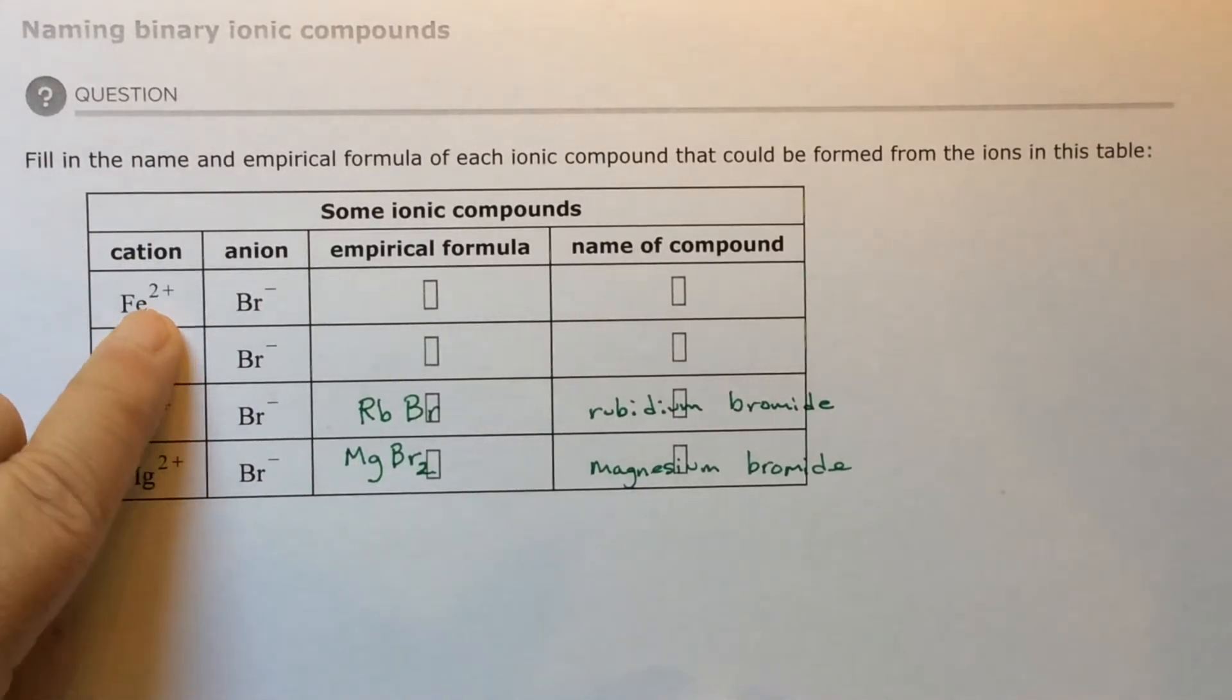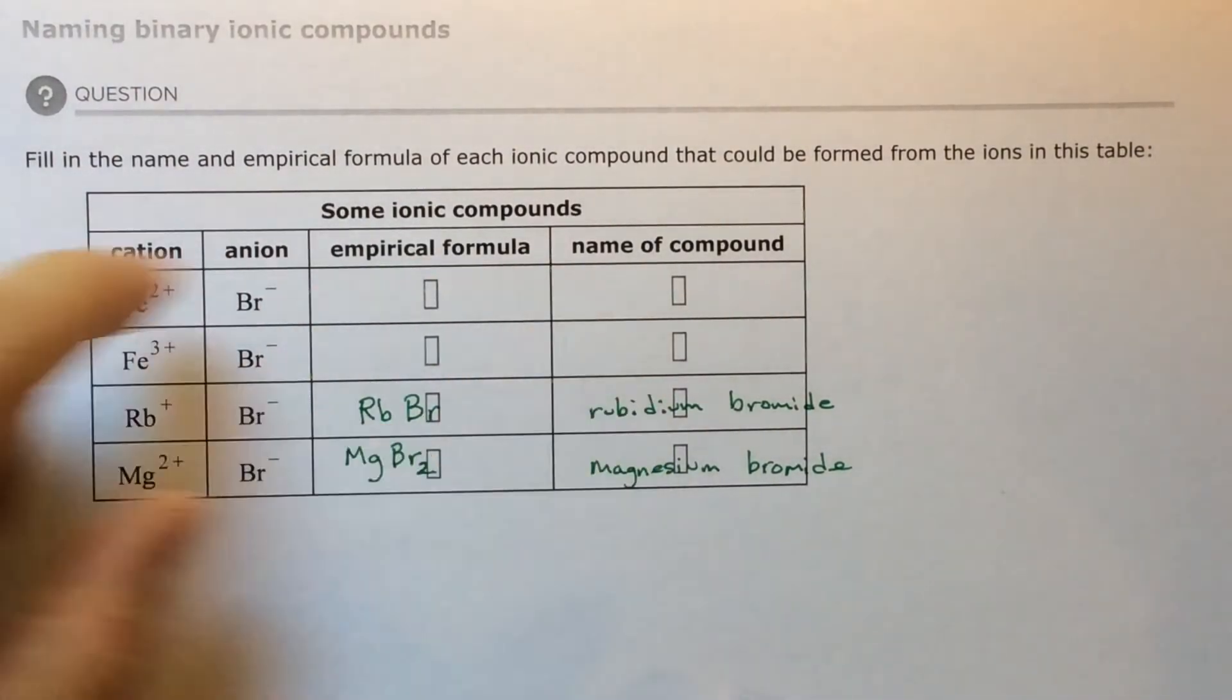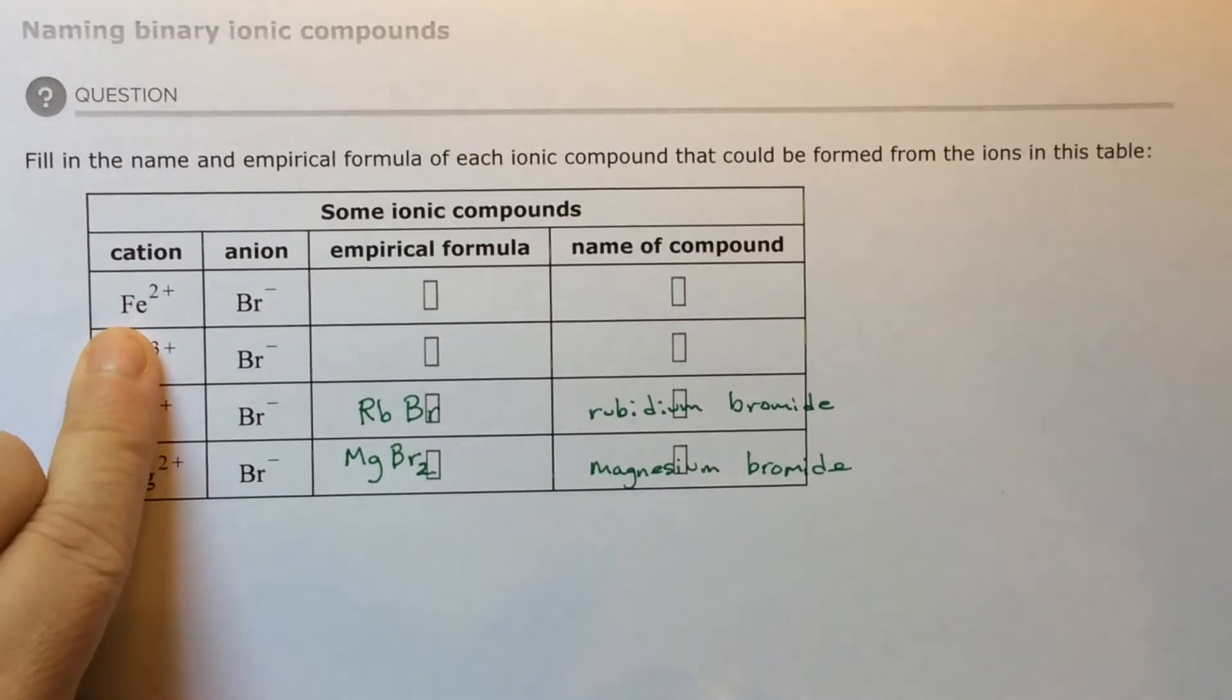Iron is weird. Sometimes iron is positive two. Sometimes iron is positive three. Any of these ones in the middle, from scandium to zinc, or even anything under the stairs like lead, all of these can have multiple charges. So when you put it together, you have to name it a special way.